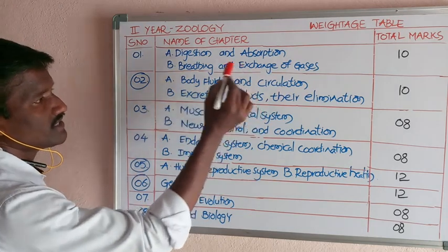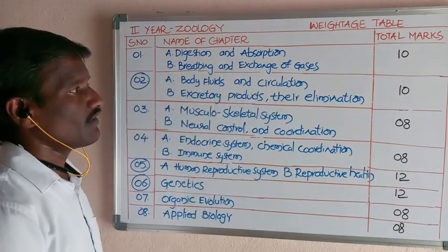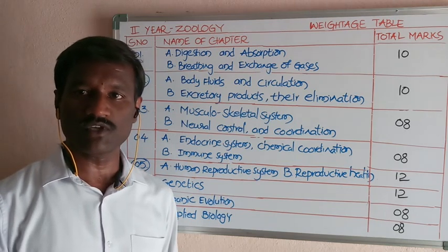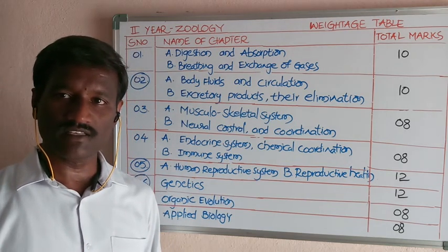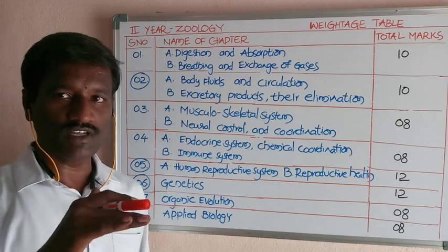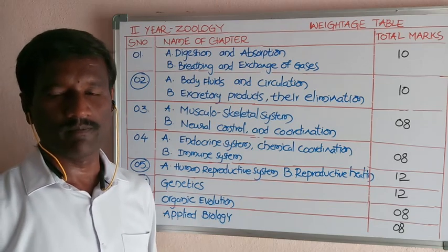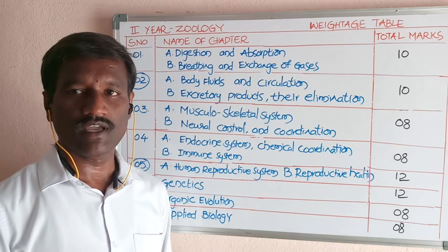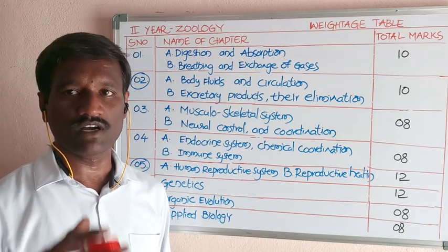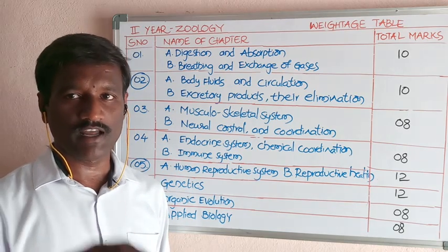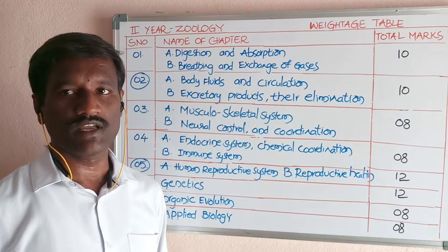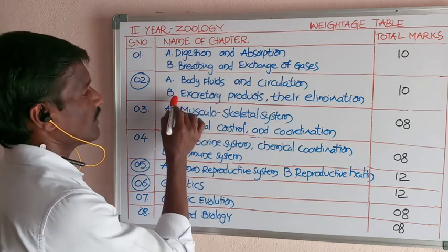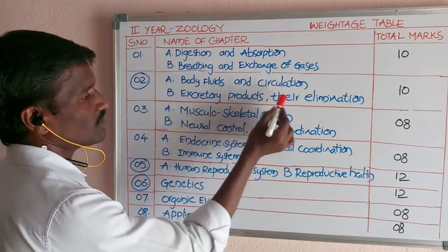The second chapter is body fluids and circulation. Body fluids are differentiated into two types: lymph and blood. Topics include how blood circulates, the importance of the heart, the structure and function of the heart, and different types of blood vessels.